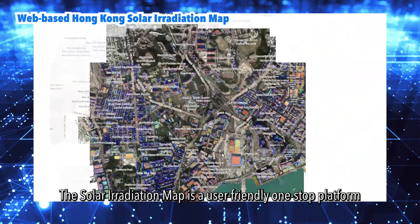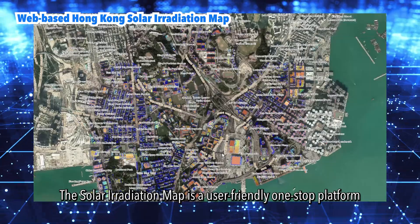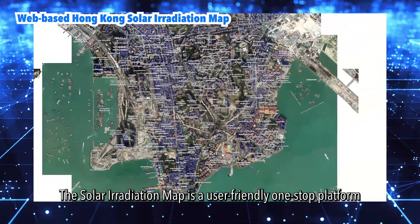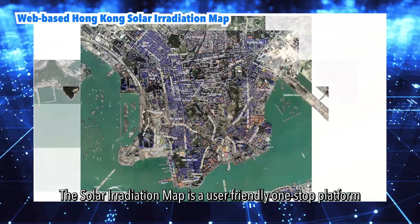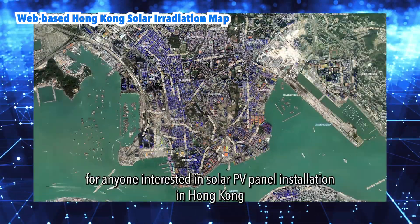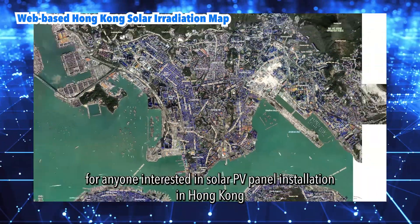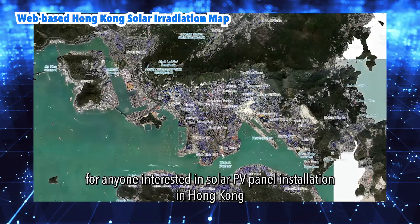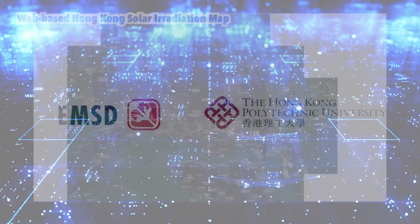The solar irradiation map is a user-friendly, one-stop platform for anyone interested in solar PV panel installation in Hong Kong.